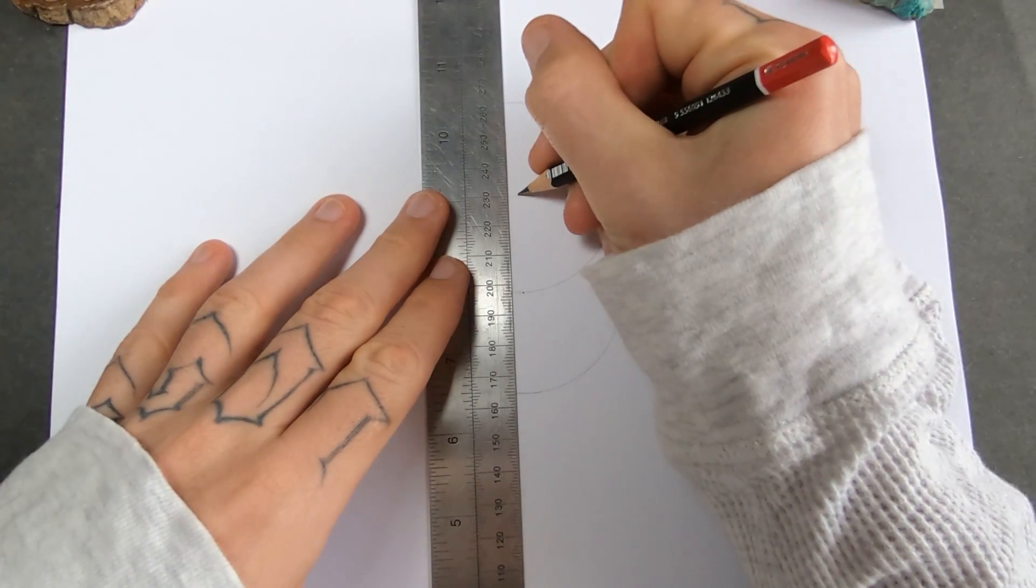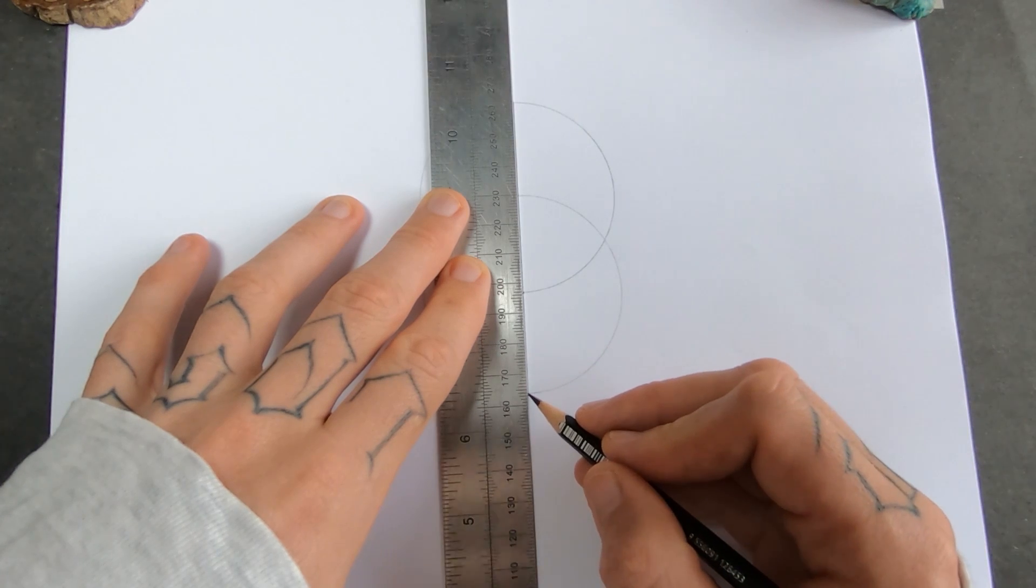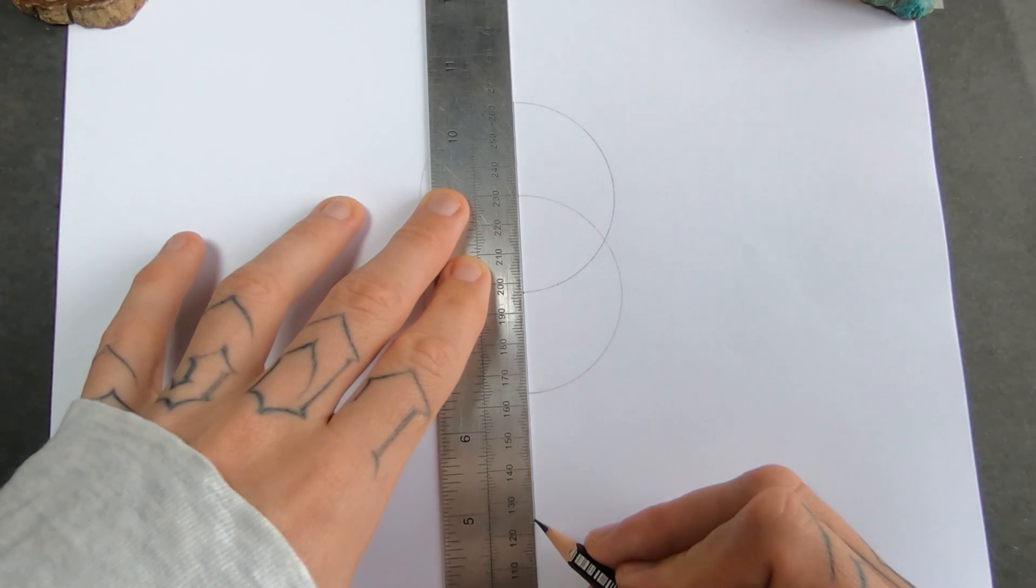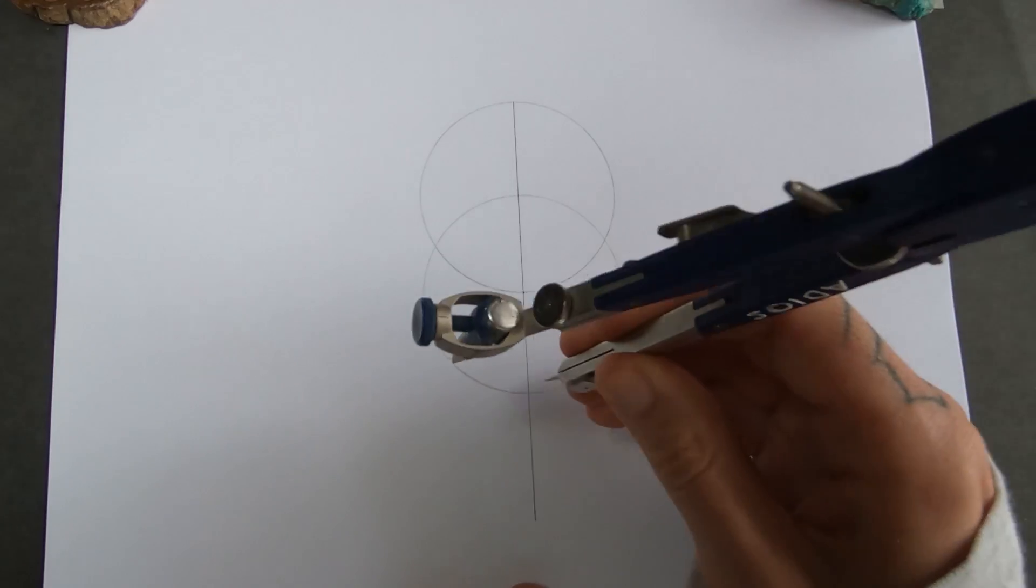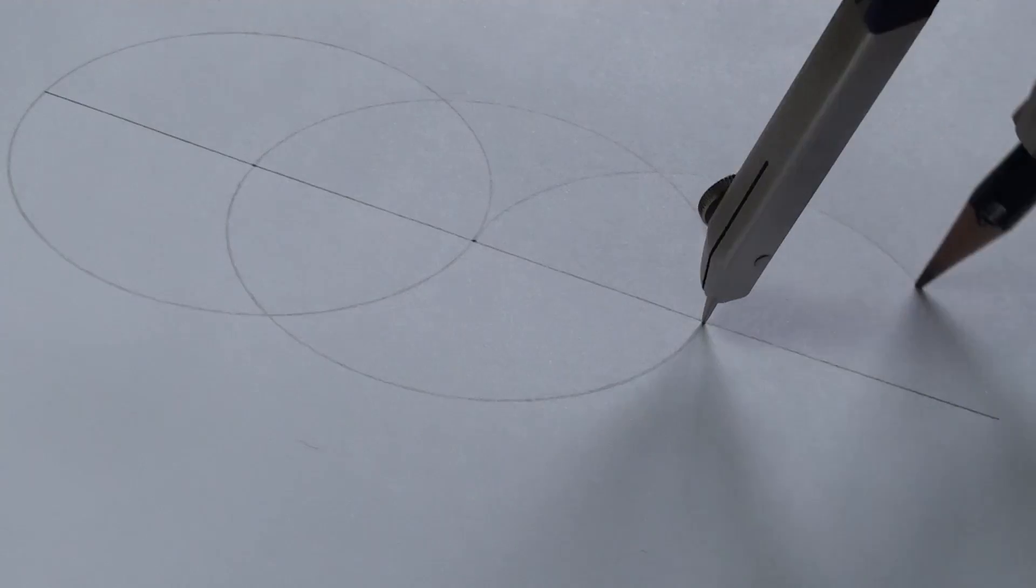Then I'll connect these two points and draw a line from the top, straight through that circle, straight through the middle circle, and then extend in to around about where I think another circle would finish. Then I'm going to put my compass point where that line crosses the circle and draw another circle.